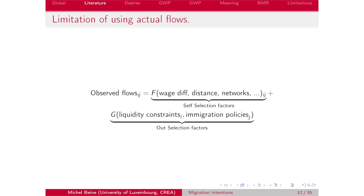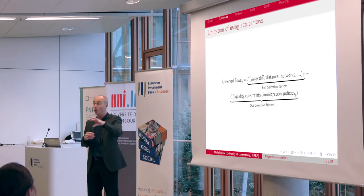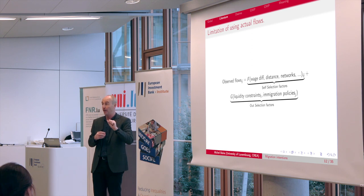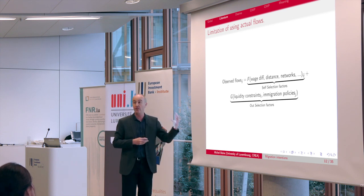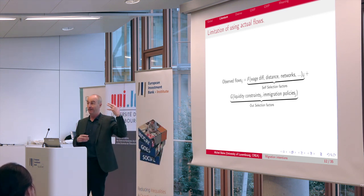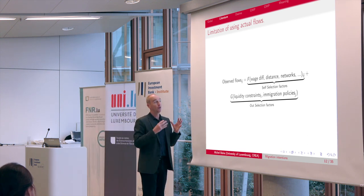People need money to be able to move; they need access to infrastructure to leave their country. And of course there is the elephant in the room, which is related to immigration policies — how destinations allow you to come. What I mean by immigration policies is all the visa restrictions that especially developed countries put on people wishing to migrate.